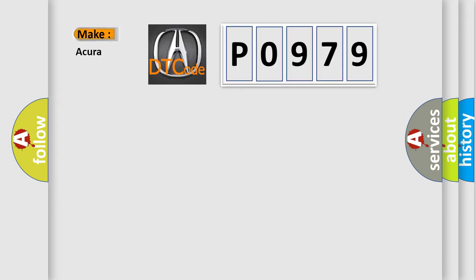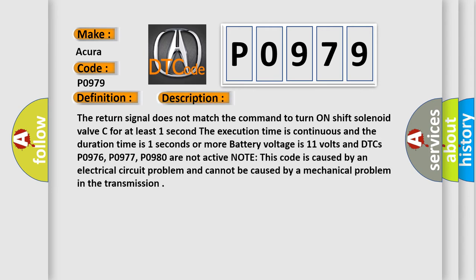So what does the diagnostic trouble code P0979 interpret specifically for Acura car manufacturers? The basic definition is short in shift solenoid valve C circuit. And now this is a short description of this DTC code.